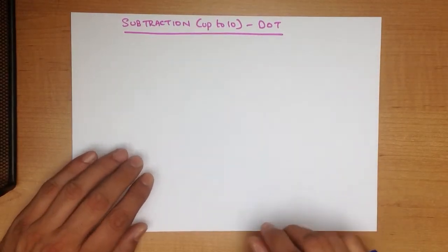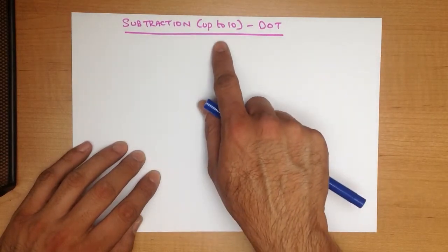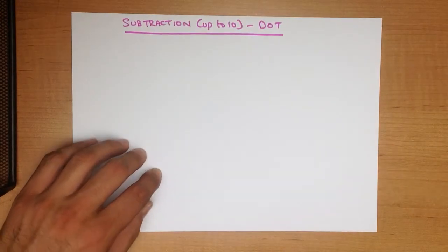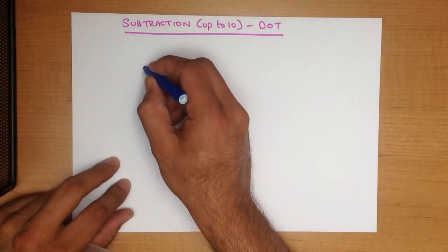In this tutorial we are going to go through subtraction of numbers up to 10 using the dot method. So let's start with a nice easy example.